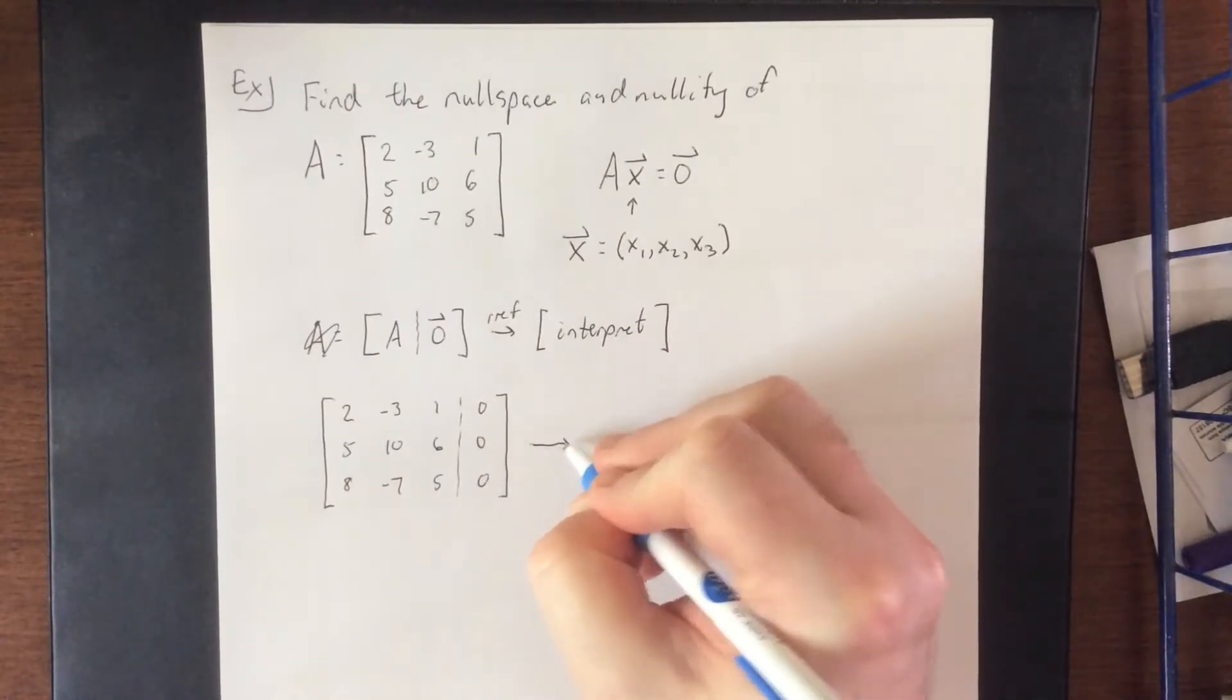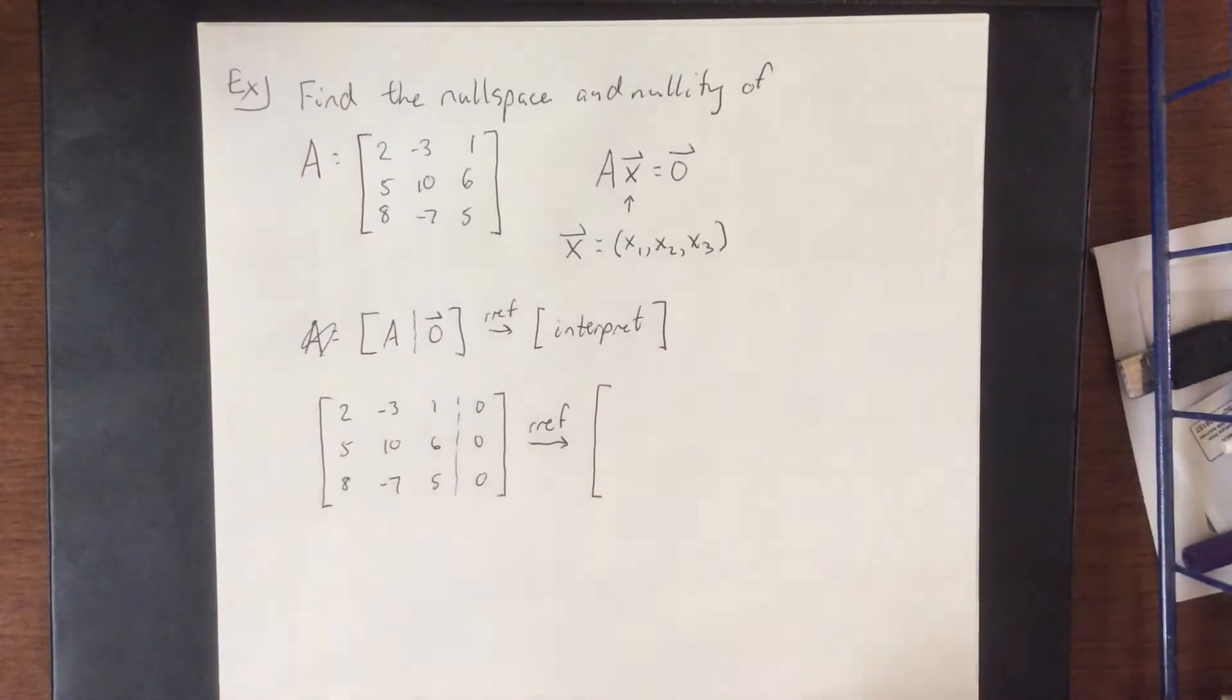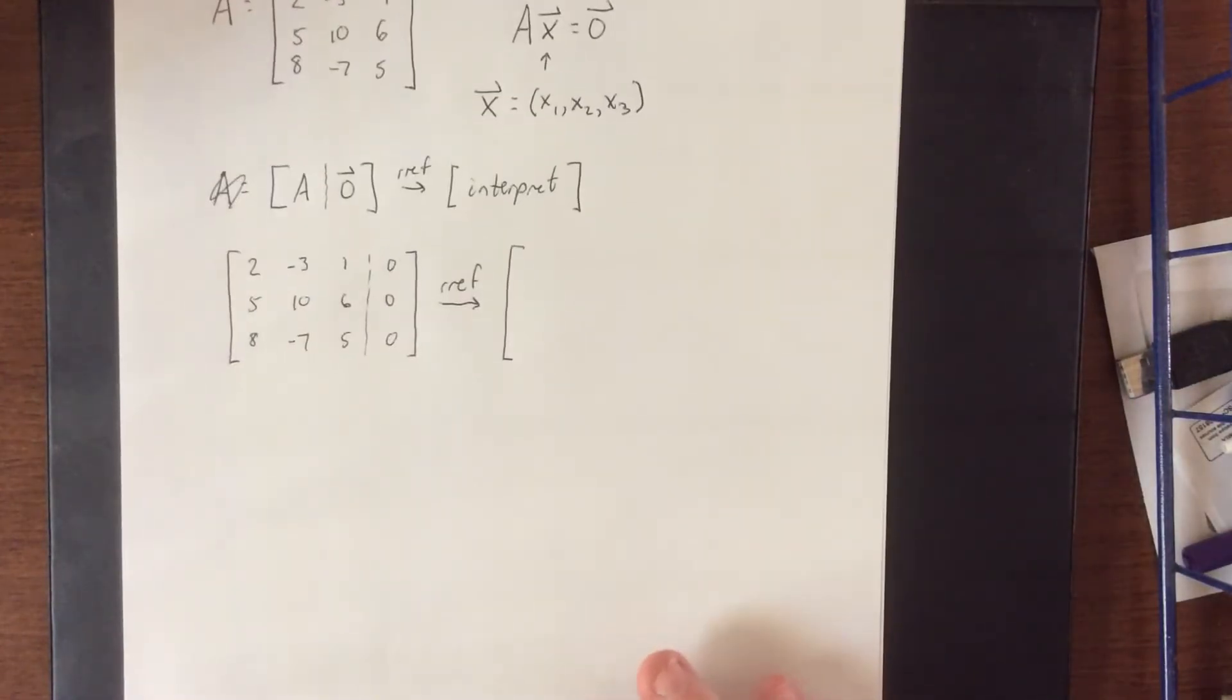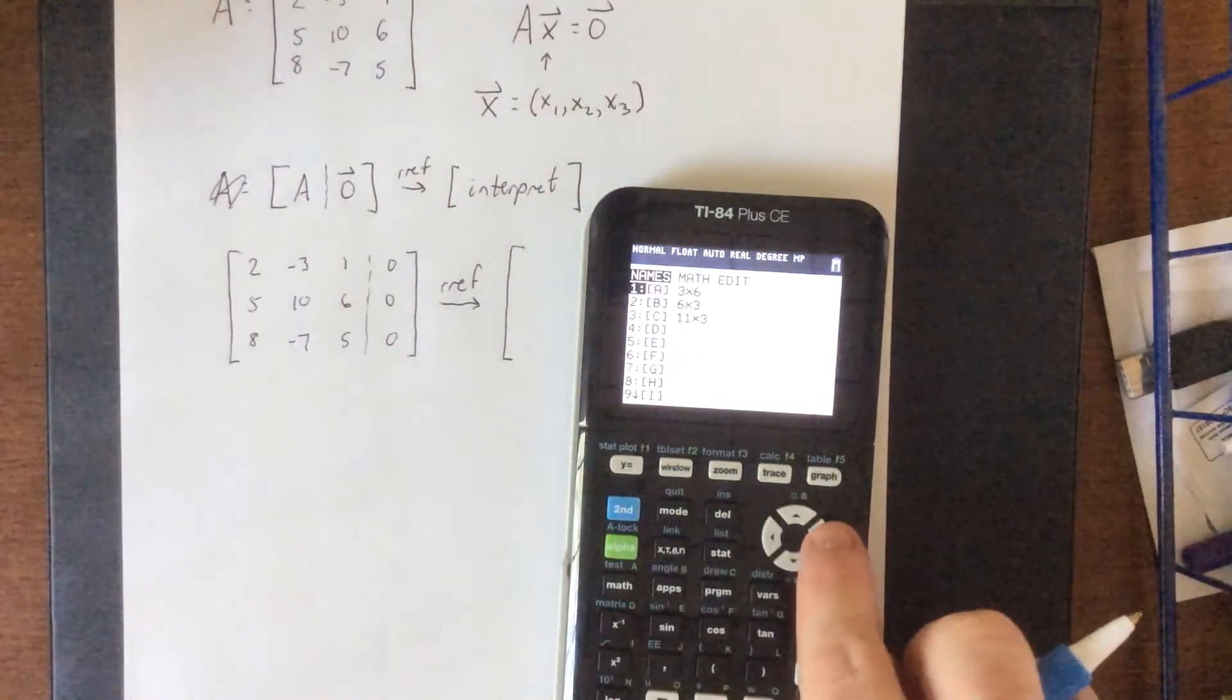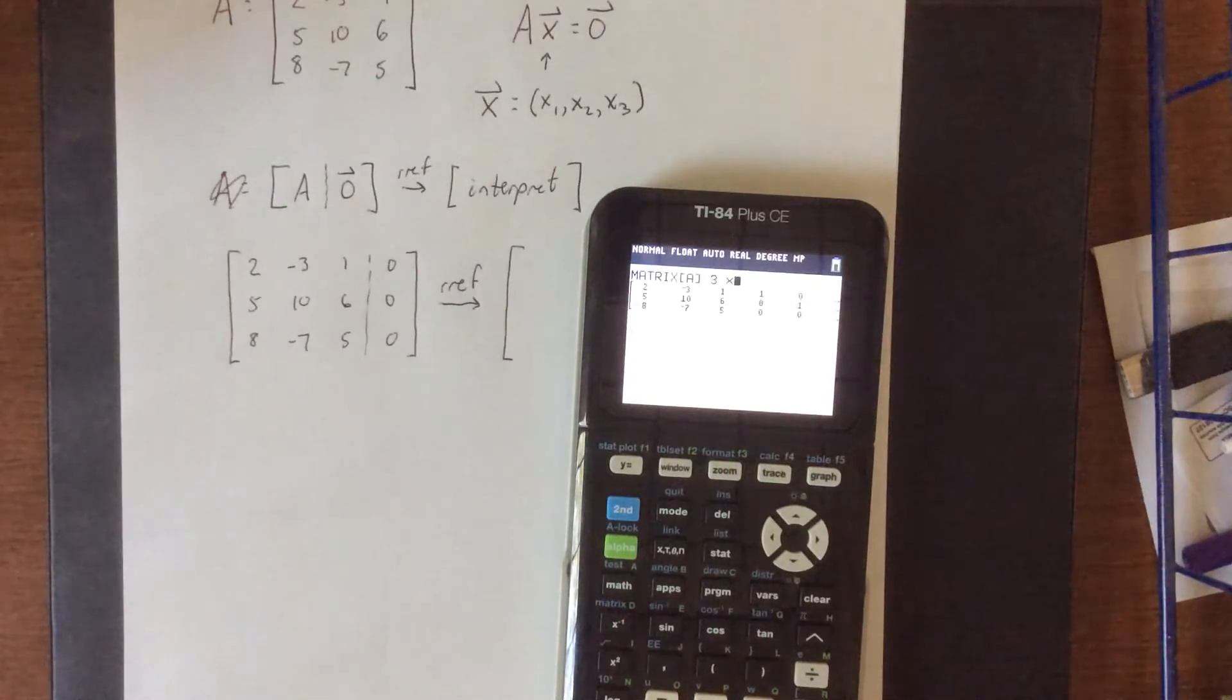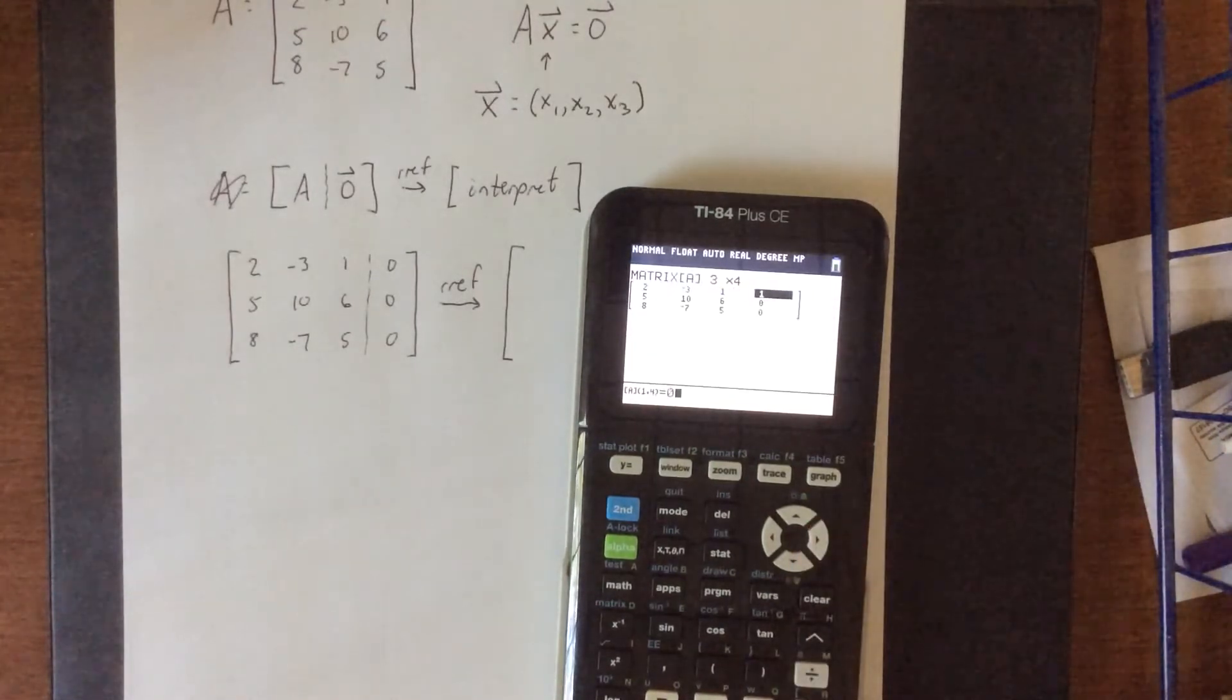Now from the last video, we saw that reduced row echelon form did have a row of zeros at the bottom of the matrix. So let's see what happens this time with everything in place. So heading into the matrix menu, I'm going to go over to the edit and I do see that we have the matrix in here left over from last time. We'll change this to a 3 by 4 and make sure that all of the augment is simply the zero vector.